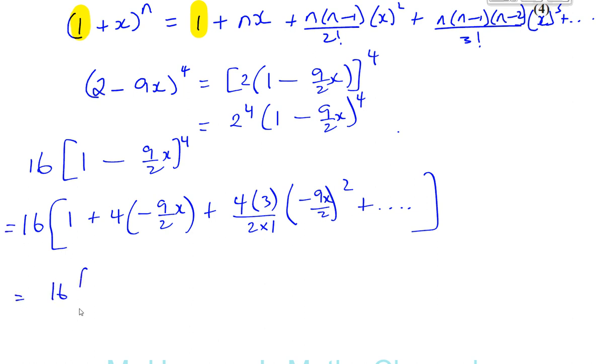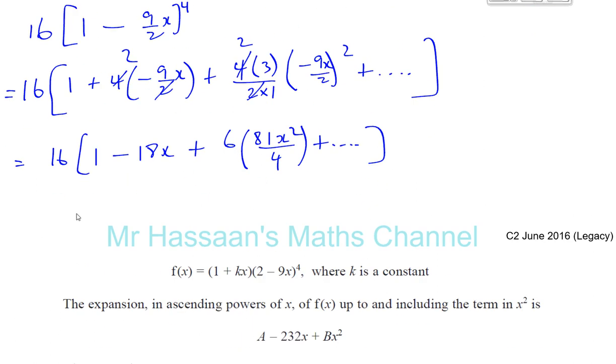So that's going to give us 16 times [1 plus, the 4 and the 2 cancel out, so you're going to have minus 18X. And here the minus is going to get squared so that's going to still be a plus. The 4 and the 2 cancel out gives you a 2, so you have 2 times 3 is 6]. I'm not going to do it all in one go because I want to expand these first. That's minus 9 squared which gives you 81. 81X²/2² is 4.